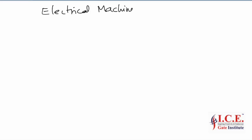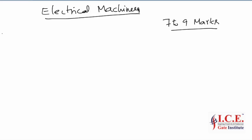Welcome to ICE Gate Institute. We are going to discuss electrical machines, which has a weightage of seven to nine marks from the GATE point of view. Energy is available in many forms in the universe. All available forms of energy are commonly converted into electrical energy because it is easily generated, transmitted, utilized, and controlled. The controlling of electrical power is very easy, reliable, and efficient.